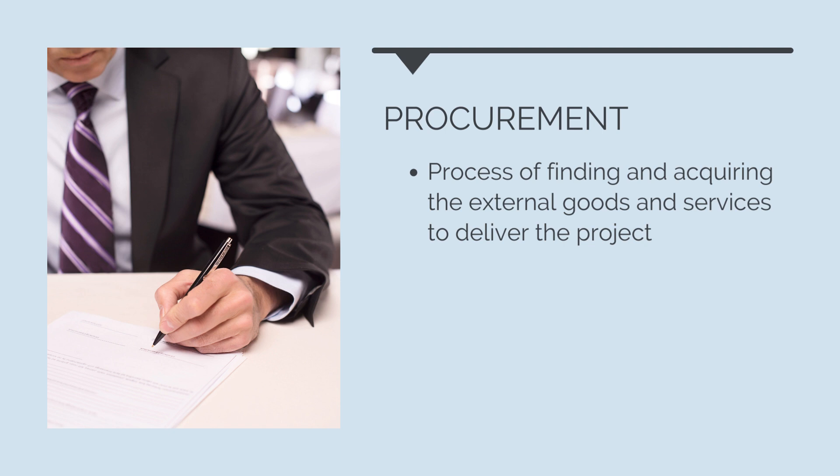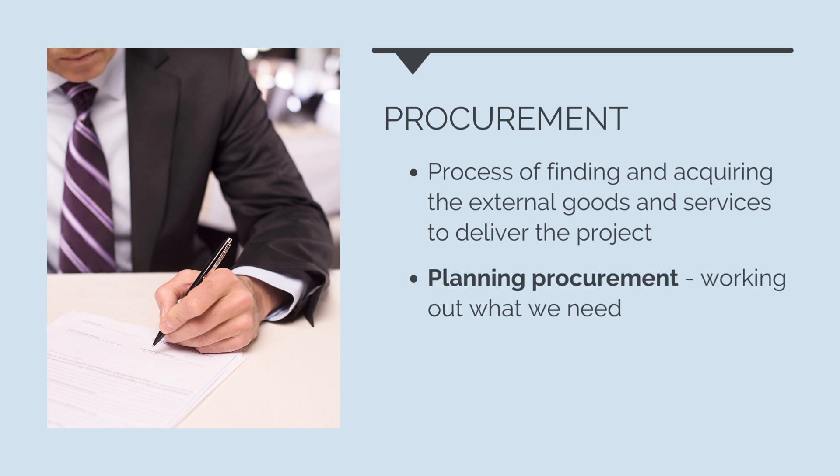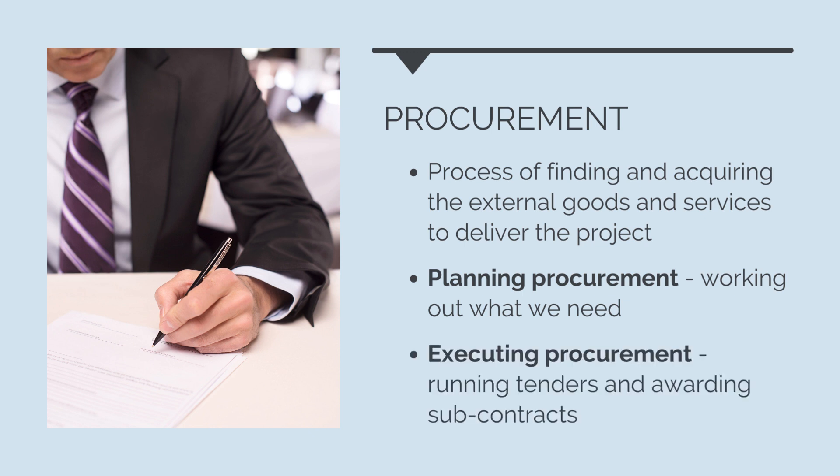This occurs in two stages: planning and executing procurement. Planning procurement requires us to work out what we need to procure. It involves developing the procurement strategy and working out what subcontractors we need. Executing procurement is then the process of creating tender packages, running tenders and awarding subcontracts.